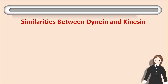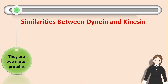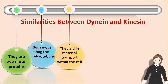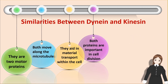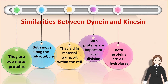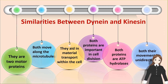Similarities between dynein and kinesin. They are both motor proteins. Both move along microtubules. They aid in material transfer within the cell. Both proteins are important in cell division. Both proteins use ATP hydrolysis, and both their movement is unidirectional.